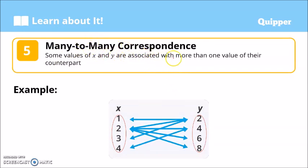Next, we also have the many-to-many correspondence. Some values of X and Y are associated with more than one value of their counterpart. So it looks chaotic, right? One value of X is mapped or associated to many Y, and one value of Y is also associated to many X. So we call that many-to-many correspondence.